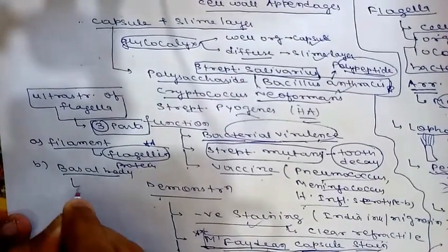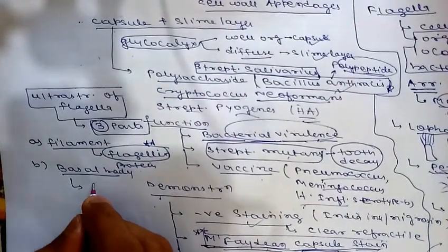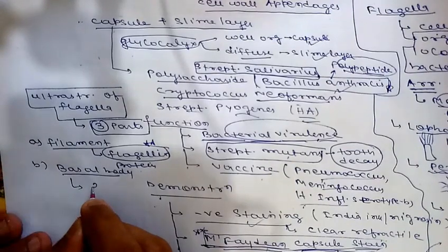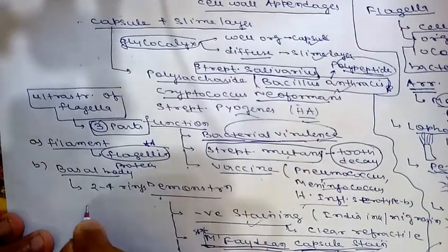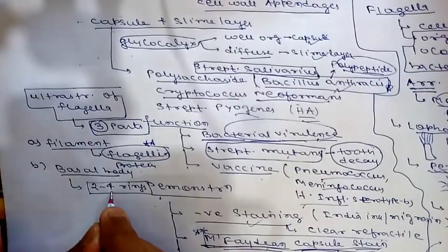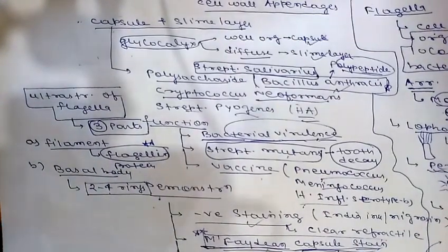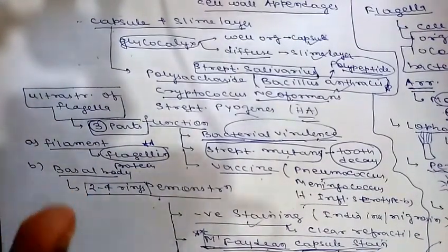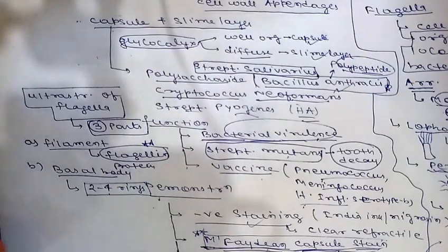The next part is the basal body — the portion of the flagellum embedded in the cell. It is the most complex part, made up of two to four rings connected to a central rod. The number of rings differs between gram-positive and gram-negative bacteria.